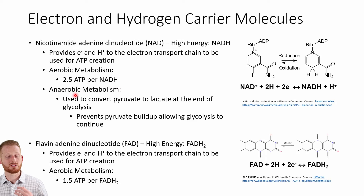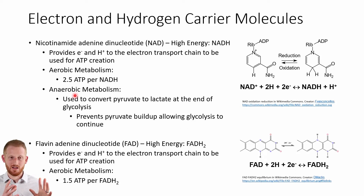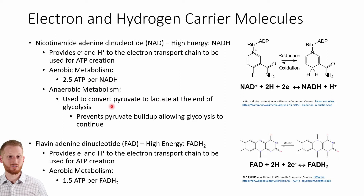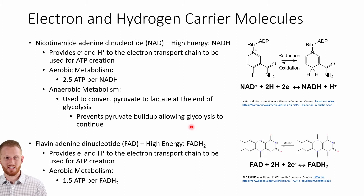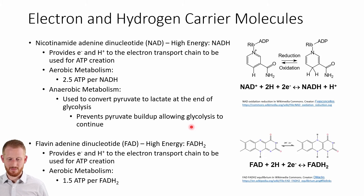NADH can also be used anaerobically. When glycolysis is running faster than aerobic metabolism can keep up and we're making lactate, the production of lactate from pyruvate actually requires an NADH molecule — we break down an NADH back into NAD to produce lactate from pyruvate. Lactate production actually allows your glycolysis pathway to continue functioning, because a buildup of pyruvate without aerobic metabolism keeping up would cause glycolysis to shut down, significantly decreasing our ability to produce energy.